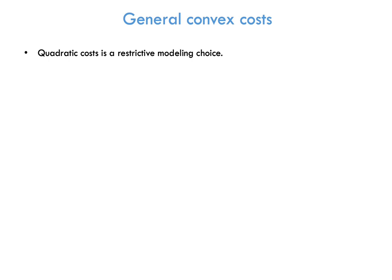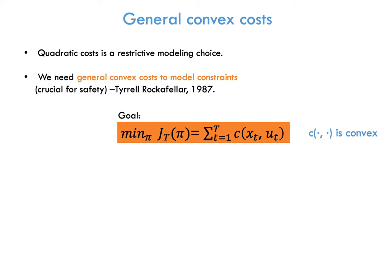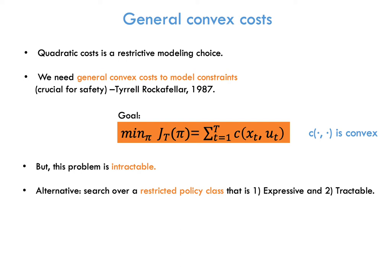LQR is appealing because it has a simple solution. However, the modeling choice of quadratic costs is very restrictive. In 1987, Tyrell Rockefeller proposed the use of general convex costs in order to model constraints on the state and control. The reason is that constraints are crucial for ensuring safety in control. So, for a given convex function c, our goal is to find the policy that minimizes the cumulative cost. However, there is a price for this generality. The optimization problem is intractable and the optimal policy can be a very complicated function. A way to circumvent this is by searching over policies from a policy class that is both expressive and tractable.